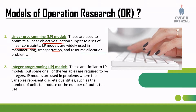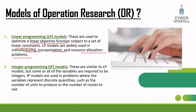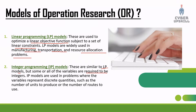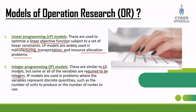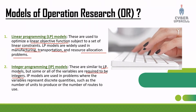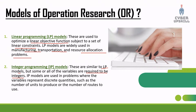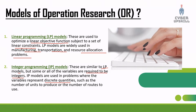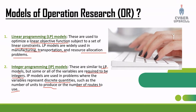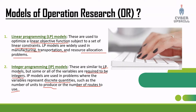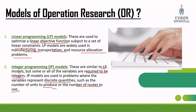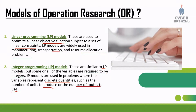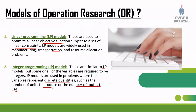The next model is integer programming, or IP. IP models are similar to LP models, but some or all of the variables are required to be integers. IP models are used in problems where the variables represent discrete quantities, such as number of units to produce or number of routes to use. For example, if a factory has 100 products, we use integer programming to model the number of processes.